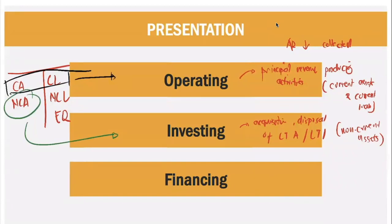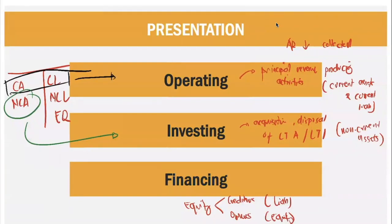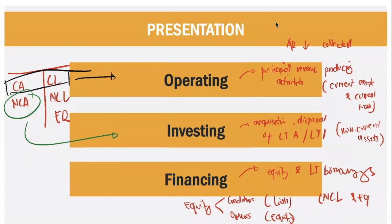Now we go to Financing. When we talk about Financing, we talk about the amounts of your Equity. Your Equity comes from your Creditors and your Owners — normally these are your Liabilities and Equity. It is considered Financing because most of the capital of the business comes from Creditors and Owners. For Financing Activities, normally this is from Equity and Long-Term Borrowings. Therefore, if ever the transaction comes from Non-Current Liability and Equity portion, it is considered Financing.